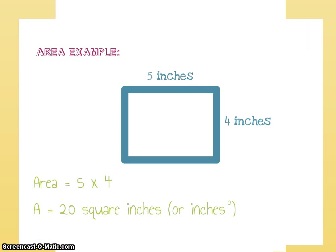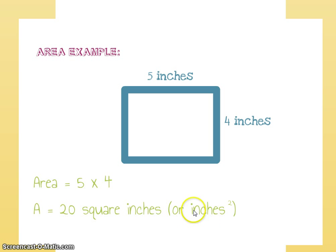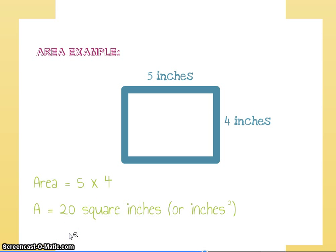So for area: if I have a rectangle and it's five inches long and four inches wide — a length of five inches and a width of four inches — all I'm going to do is simply multiply these together. Five times four gives me 20 square inches. I could also write it as inches squared — that little two up there means squared — which is an appropriate way to write it as well.